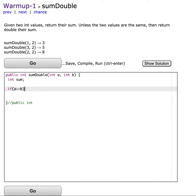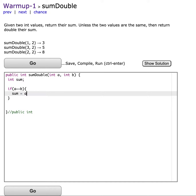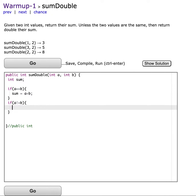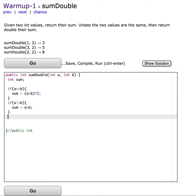If a equals b, sum equals a plus b. If a does not equal b, sum equals a plus b — actually we don't have to do this, but if a does not equal b, sum equals a plus b times two. Okay, so return sum.